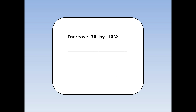Increase 30 by 10%. First of all I'm going to find the increase and then I'm going to add it on to the original of 30. 10% is the same as a tenth. To find a tenth I divide by 10. 30 divided by 10 is 3. This is the increase. And now I add on to the original. 30 plus 3 is 33.